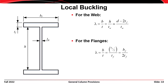We define lambda values as b-over-t ratios, where b is the breadth of an element and t is the thickness. For the web specifically, the slenderness value is h over t sub w, where h is the section depth minus two times the flange thickness. For the flanges, lambda is b sub f divided by two times t sub f, since b is taken as half the flange breadth.